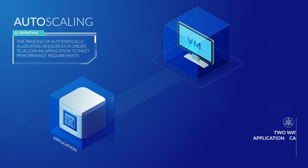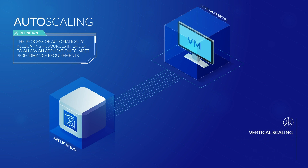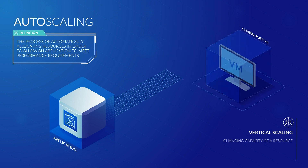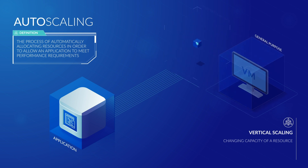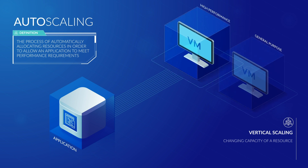There are two key ways that an application can scale: vertical scaling and horizontal scaling. Vertical scaling is often referred to as scaling up and down. This type of scaling refers to changing the capacity for a resource. An example of vertical scaling would be moving an application to a larger virtual machine.